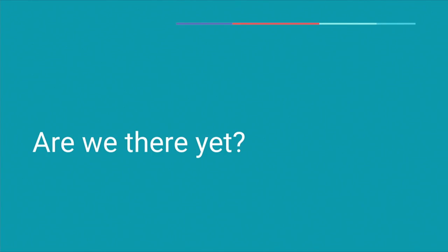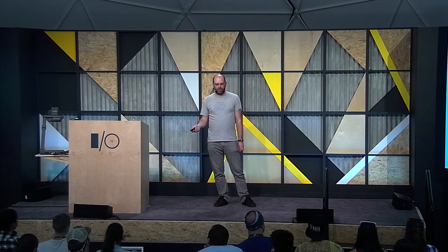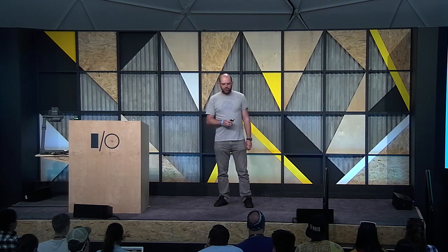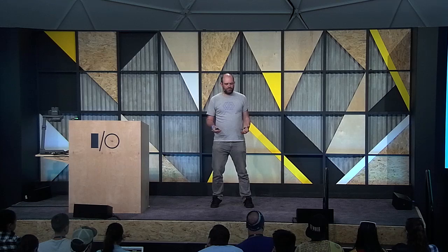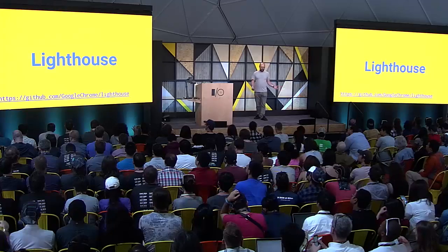We've looked at a bunch of tools that will help you fulfill all of the Progressive Web App criteria. But how do you know if you're done? What would be cool is if there was just a button you could click that would scan your site and tell you if you were missing something — so the Chrome team built one, and it's called Lighthouse.